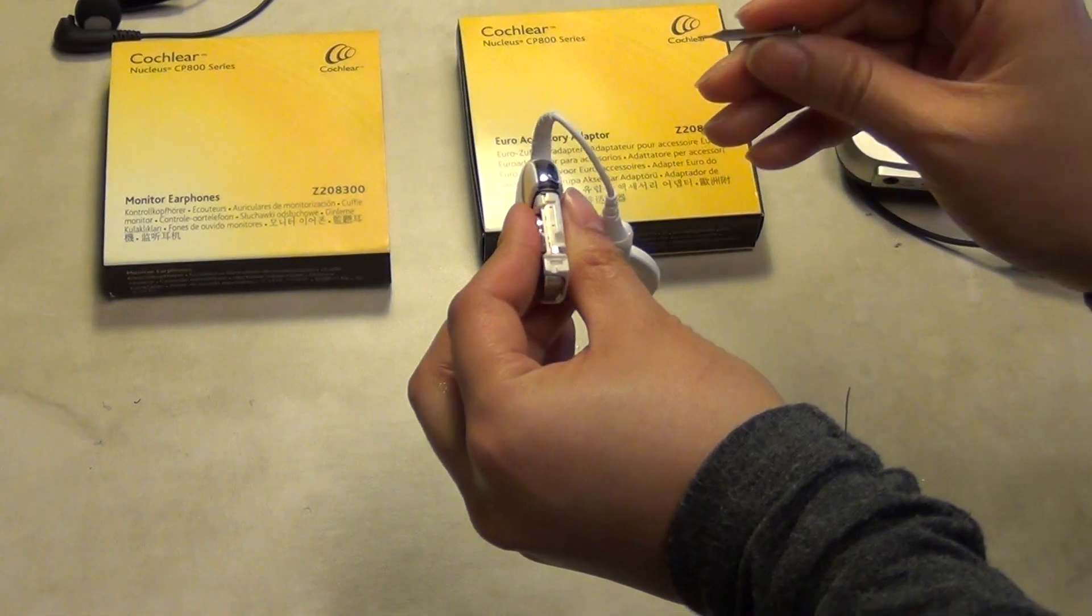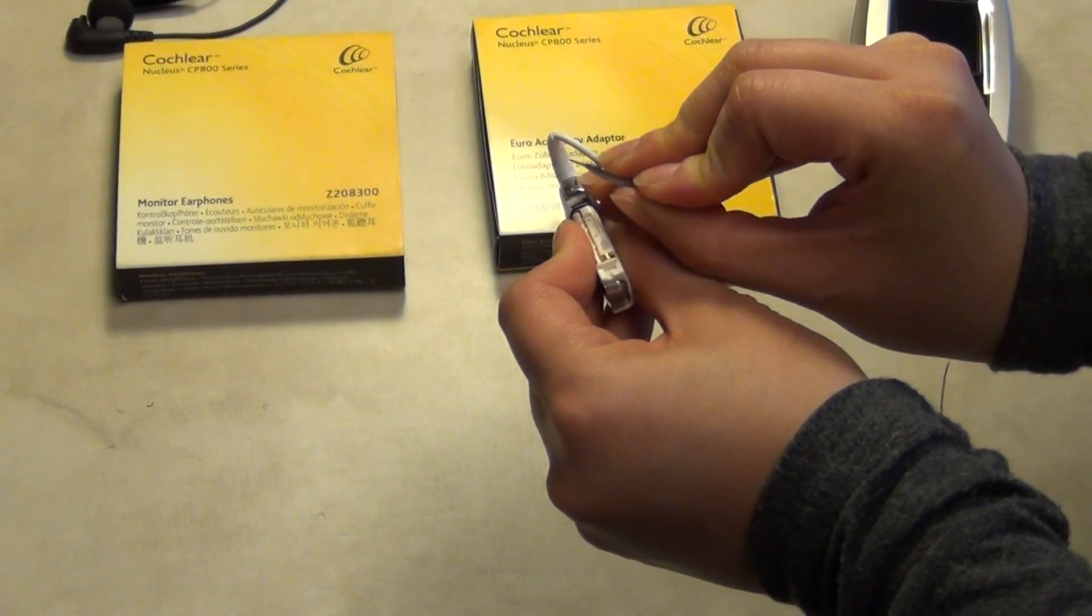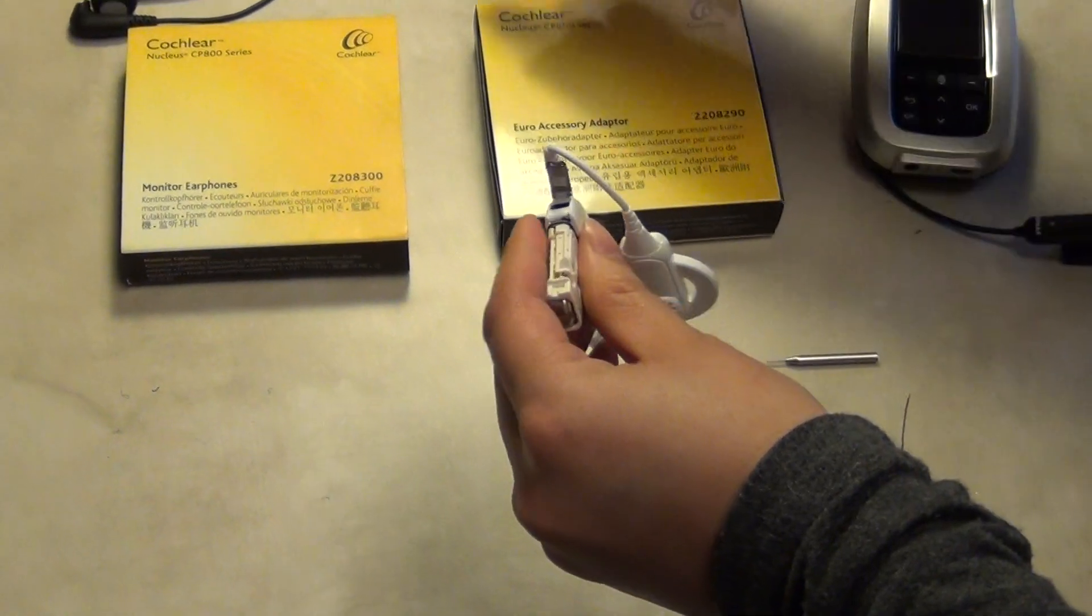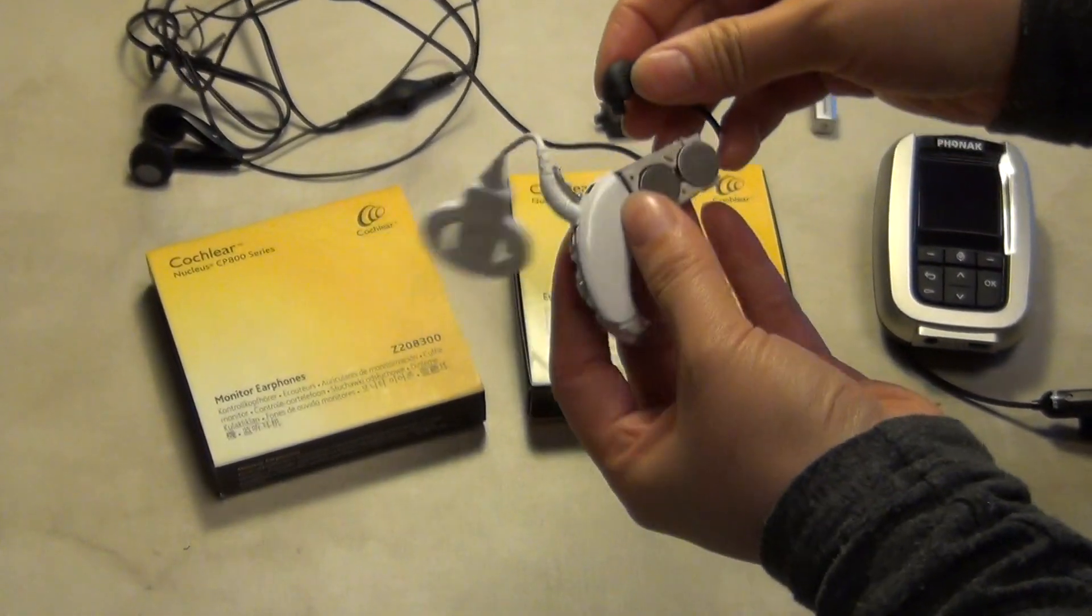Now with your screwdriver or your fingernails, lift up the door covering the accessory port on the processor. Now plug in the earphones into the accessory port.